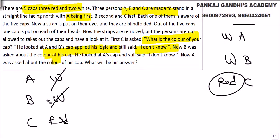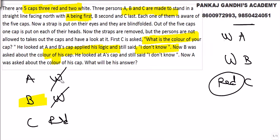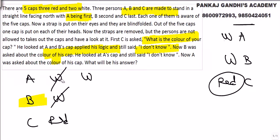Now we go to B. B is asked the color of his cap. B can only look at A's cap — he cannot turn back to see C. B looks at A's cap and applies logic. B knows that if both A and B had white caps, C would have said red. But C did not say red, so B knows both of them are not white.